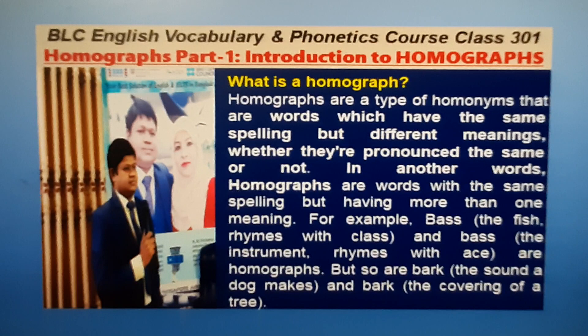For example, BASS — first meaning: the fish, rhymes with 'class'; and BASS — second meaning: the instrument, rhymes with 'S' — are homographs. But so are BARK — first meaning: the sound a dog makes, in Bangla; and BARK — second meaning: the covering of a tree, in Bangla — Gassir, Bakul, Barshal.